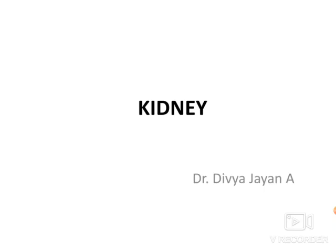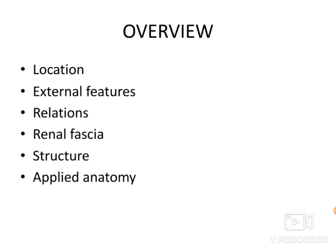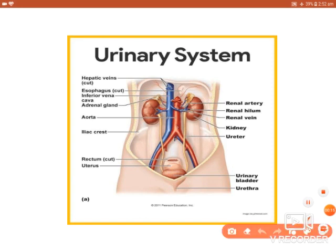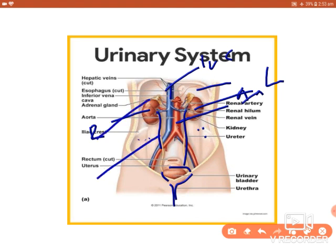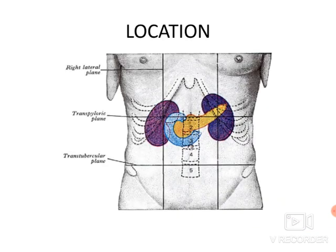Here I'll discuss the gross features of the kidney. I'll be explaining the location, external features, relations, renal fascia, macroscopic structure, and applied anatomy. The urinary system includes the kidney, ureter, urinary bladder, and urethra. Its function is to filter blood and excrete waste products from the blood.